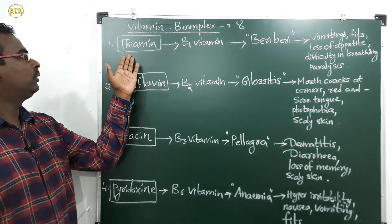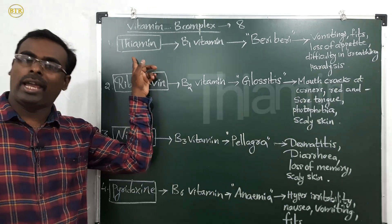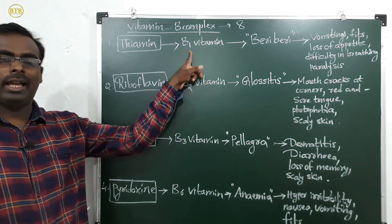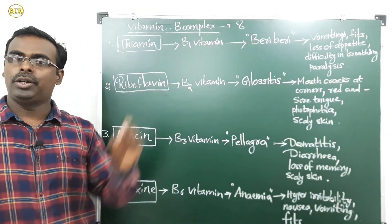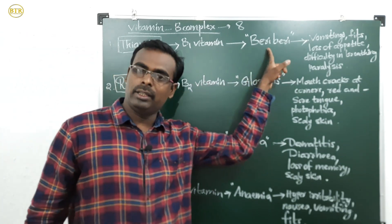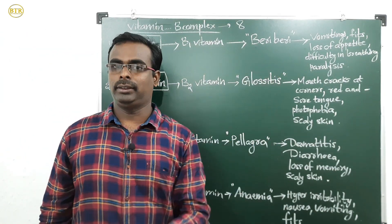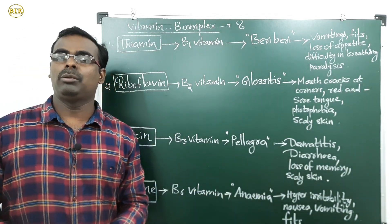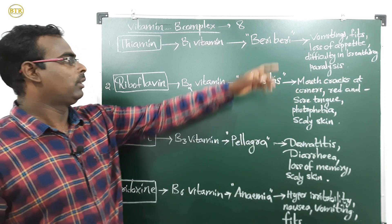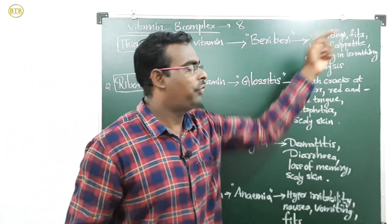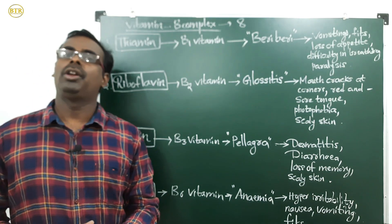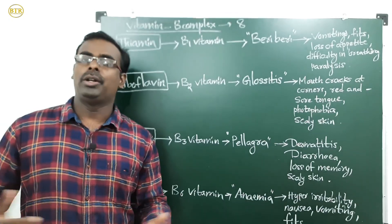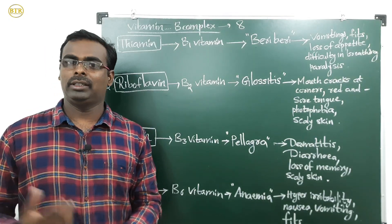The first B complex vitamin is thiamine, also called B1 vitamin. Deficiency of thiamine causes beriberi disease. The symptoms of beriberi include weakness, fits — a condition of unconsciousness due to extra electrical activity in the brain — and loss of appetite.